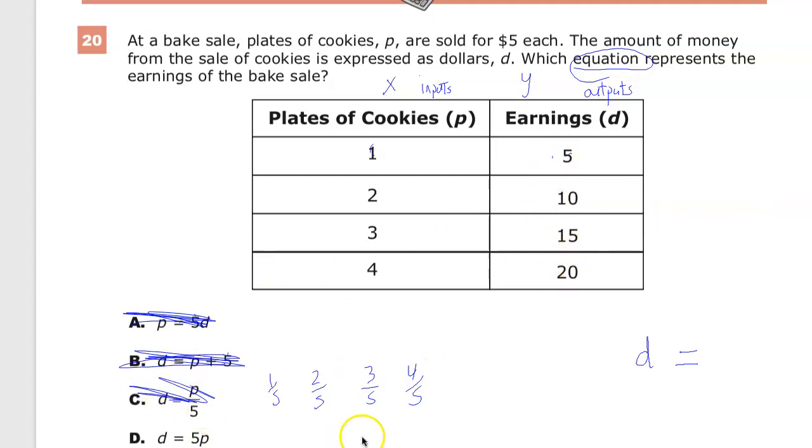So the only one that actually works is D. Because if I put the p-values in, 5 of 1, I actually do it up here. 5 of 1, 5 of 2, 5 of 3, 5 of 4. And they do, in fact, equal all the correct numbers that they're supposed to. So I input a value, and I get the expected output that I'm looking for. So this is the correct answer.